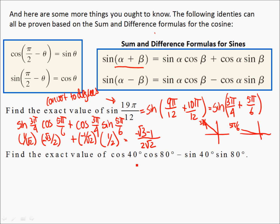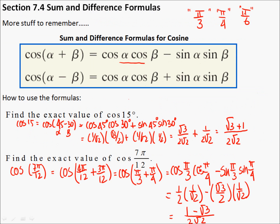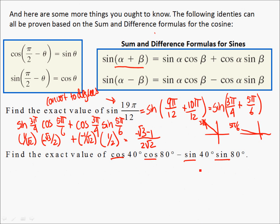You can also go backwards with those. So if I give you a pattern — the pattern here is cosine, cosine, minus sine, sine — and the 40 and the 80 are the same in both parts, which one goes with that? Clearly it's not a sine formula. So cosine, cosine, minus sine, sine — that would be when you add alpha and beta. So this whole mess could be written as the cosine of 40 plus 80, which is the cosine of 120 degrees.